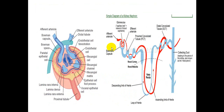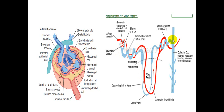This slide shows a simple diagram of a kidney nephron, consisting of the glomerulus, proximal convoluted tubule, loop of Henle, distal convoluted tubule, and the collecting duct.